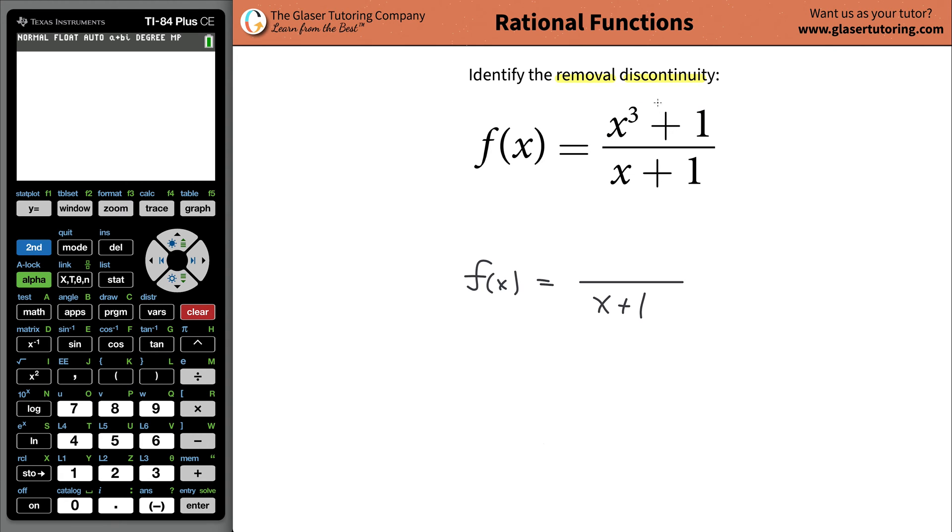Now to factor this top, we're going to use the difference of cubes formula. Now the difference of cubes formula has this general structure. If you have something that has a cubed minus b cubed, you can find a factor, and one factor at least in the quadratic equation that results by simply remembering this formula. It's going to be a minus b times an a squared plus ab plus then b squared. That's the difference of cubes formula.